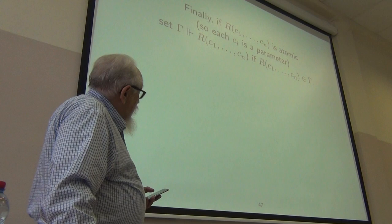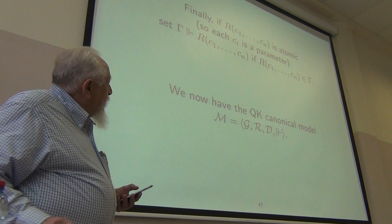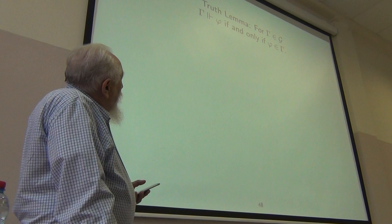So with all of that, we have what's called the QK canonical model. And again, exactly like before, you can prove a truth lemma.